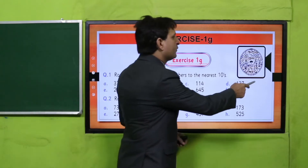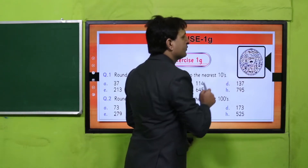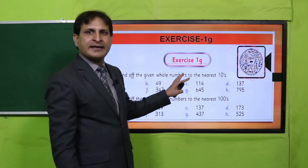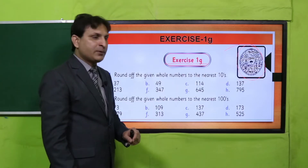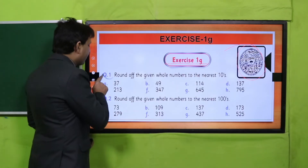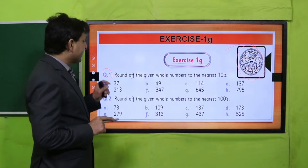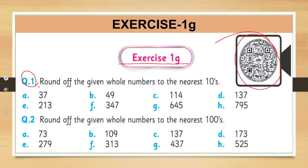یہ ہمارے پاس QR code ہے جس کو آپ scan کریں گے تو آپ کو اس lecture سے related video available ہوگی۔ اب یہاں پر دیکھیں question number 1۔ Question number 1 میں instruction ہے: گھر سے پڑھیں — round off the given whole numbers to the nearest tens.